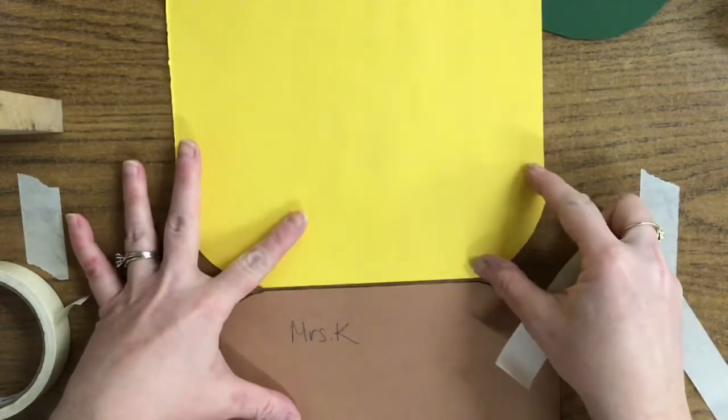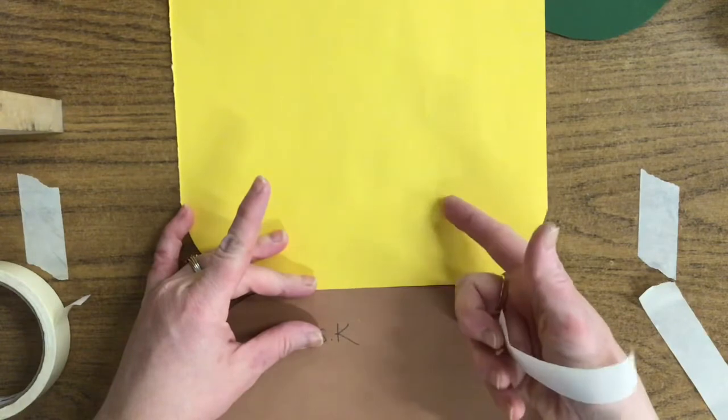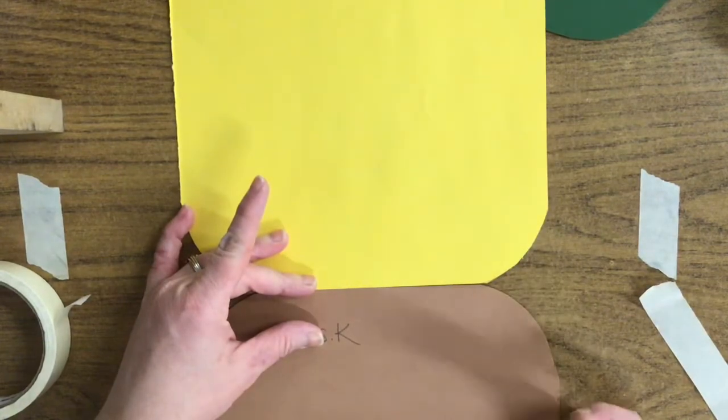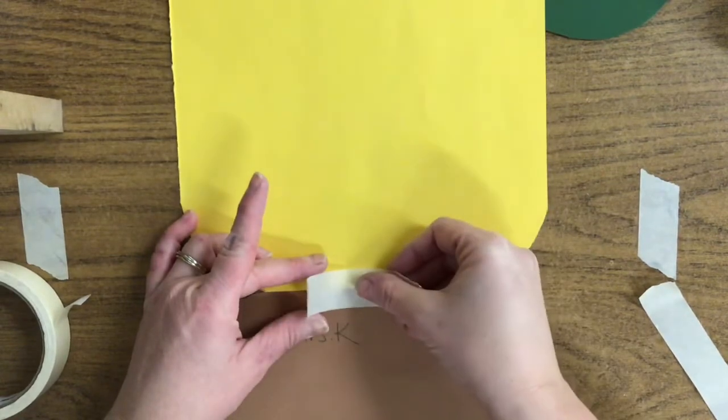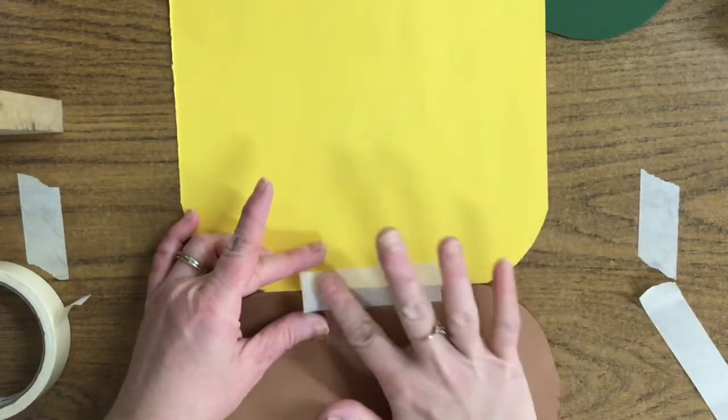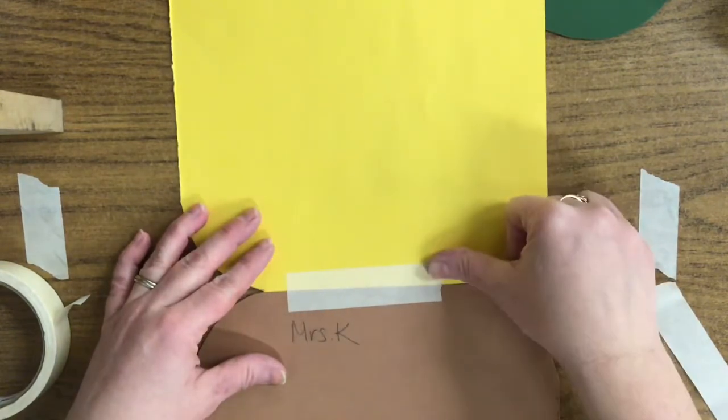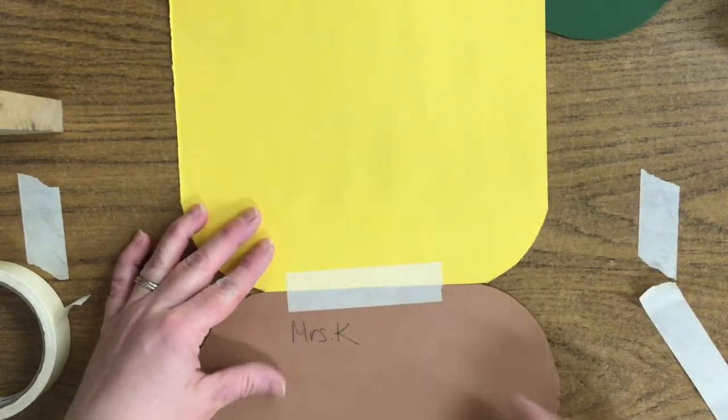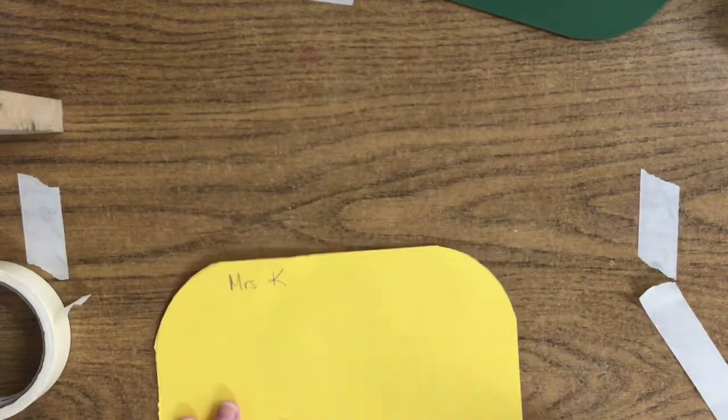You could either have a shoulder buddy hold this for you while they tape, or if you're able to do it all on your own, you want absolutely no gap in there. You're putting the tape over both pieces sideways like that. You can see that the tape is covering my yellow paper and it's covering my brown paper. Smear it down nicely and just keep working your way up.